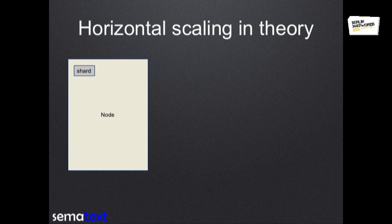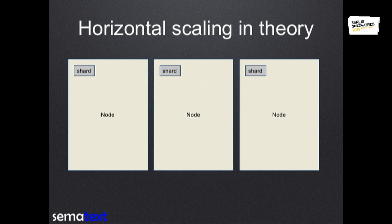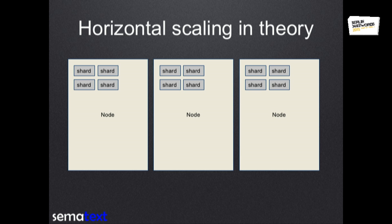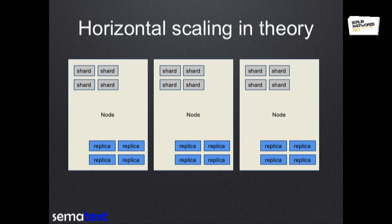When it comes to horizontal scaling in theory, we have nodes in both Elasticsearch and Solr. Each index in Elasticsearch or collection in Solr is built of at least one shard. We can have multiple nodes — then we need multiple shards, so our index or collection needs to be divided and put onto the nodes. This is done automatically. For read throughput increase we have replicas, and for each shard we can use the API to create replicas on demand.